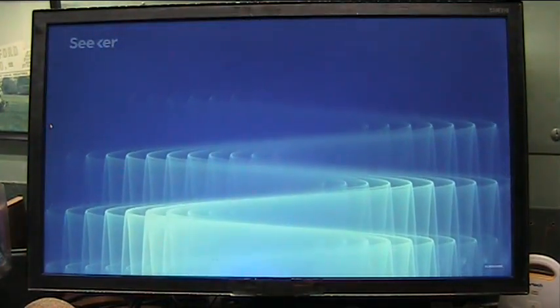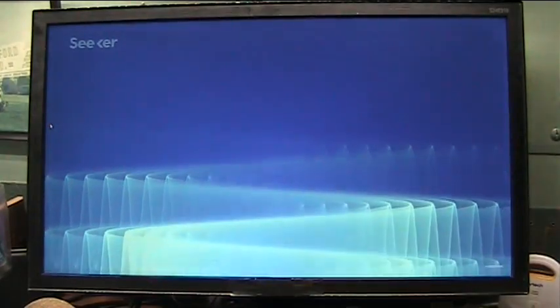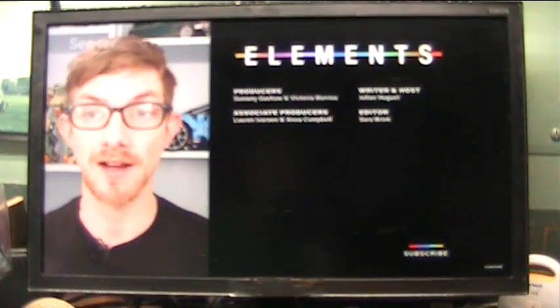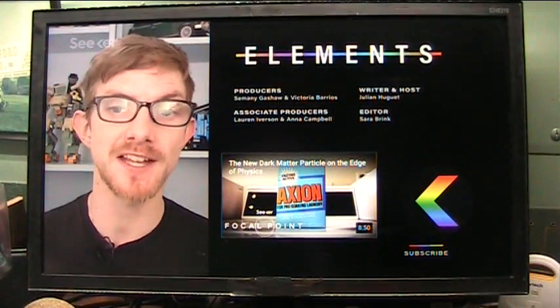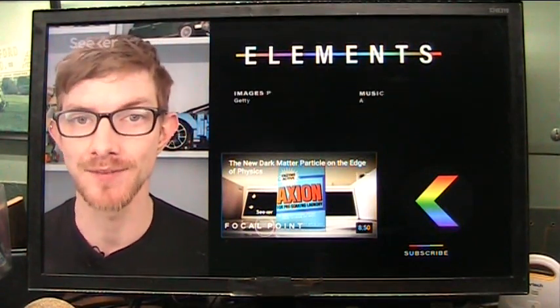Axions are not the only possible solution to the strong CP problem. And when we eventually do figure out why this expected, unexpected event isn't occurring, it'll be exciting to see where physics takes us next. If the search for axions and their relation to dark matter has piqued your curiosity, check out this focal point episode on how today's scientists are attempting to hunt them down.